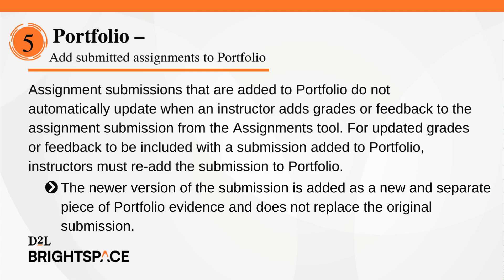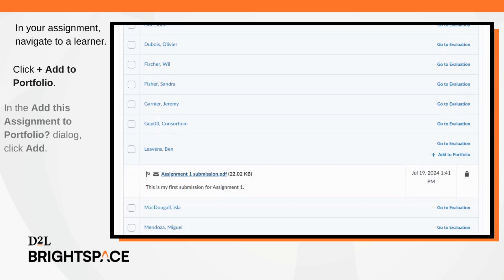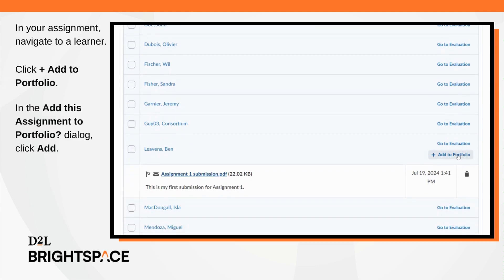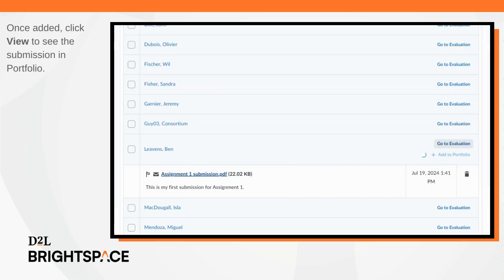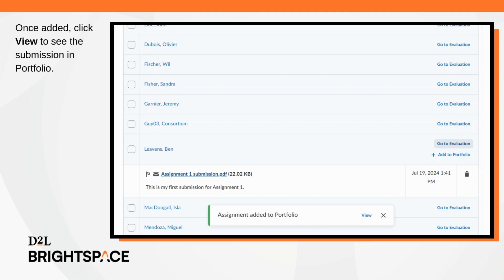Assignment submissions added to Portfolio do not automatically update when an instructor adds grades or feedback from the Assignments tool. For updated grades or feedback to be included with a submission added to Portfolio, instructors must re-add the submission to Portfolio. The newer version of the submission is added as a new and separate piece of Portfolio evidence and does not replace the original submission. Navigate to a learner's assignment submission and click Add to Portfolio, then click Add. Once the assignment has been added to Portfolio, click View to see the submission in Portfolio.